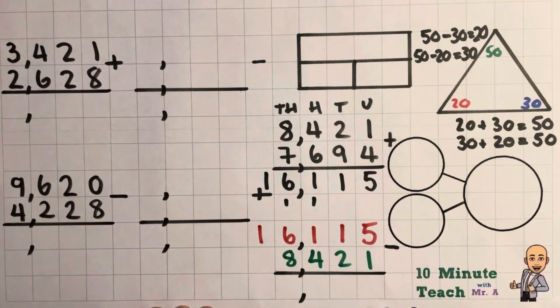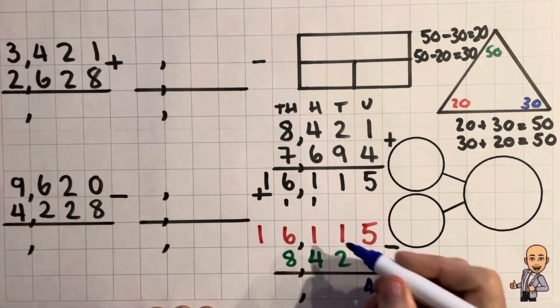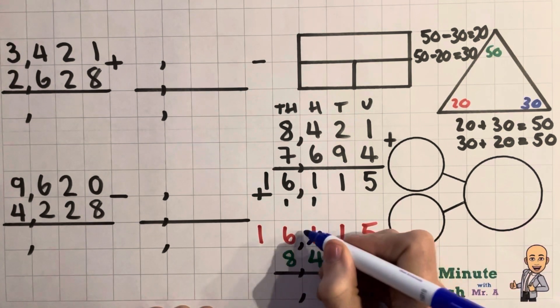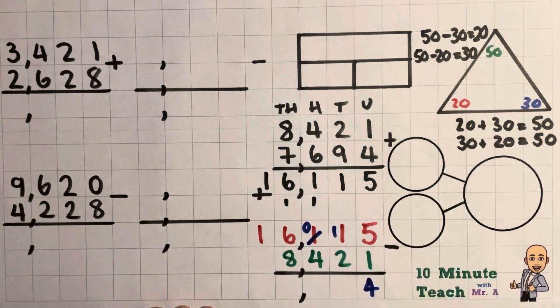So 5 subtract 1 is 4. 1 subtract 2 I can't do, so I'm going to have to borrow. That leaves that with no hundreds and 110 there. So 110 take 20, this is with 90.